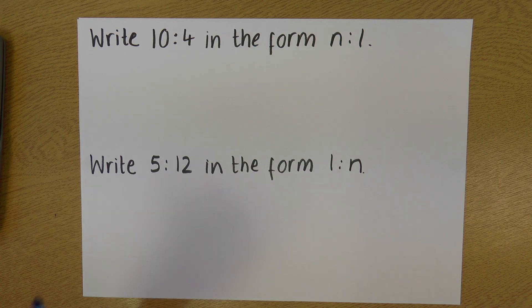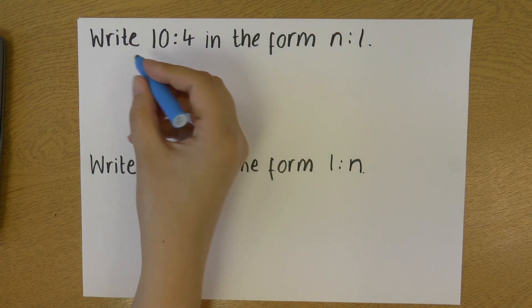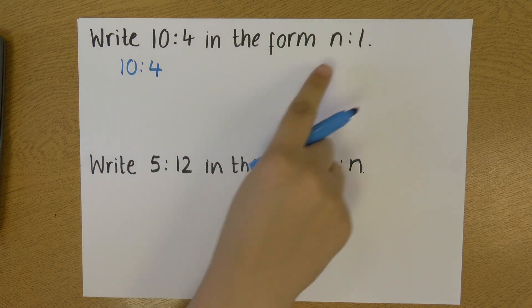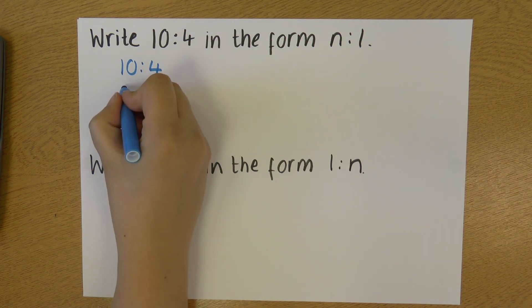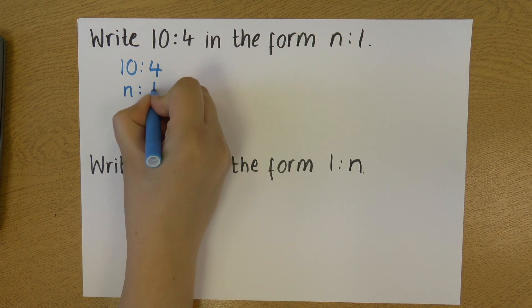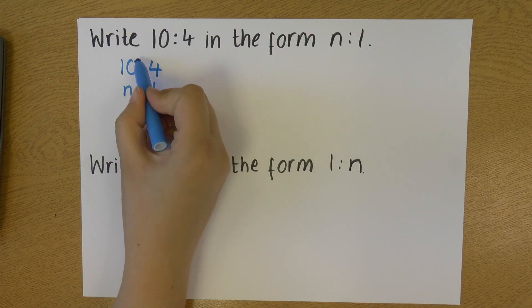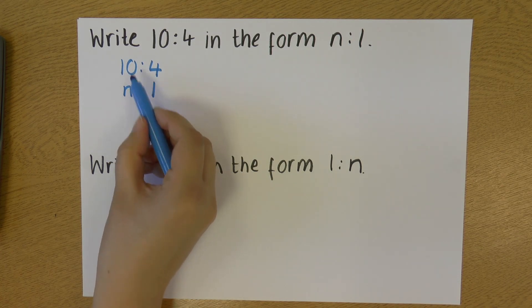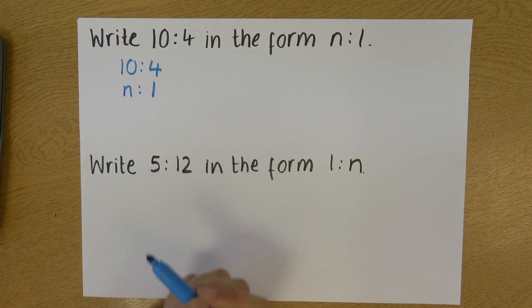The first thing I'm going to do is write my ratio with n to 1 underneath. I want my colons to line up, so you can see I've got my n underneath my 10 and my 1 underneath my 4.